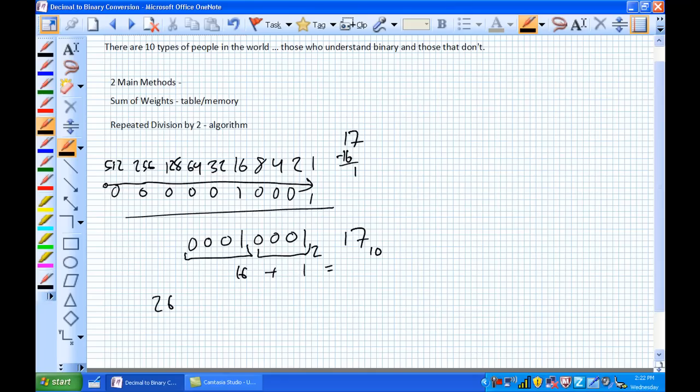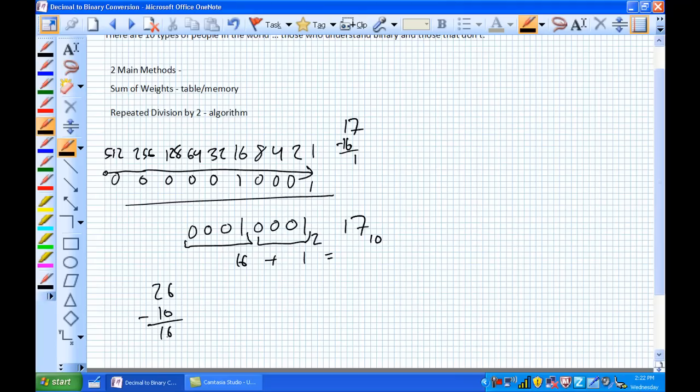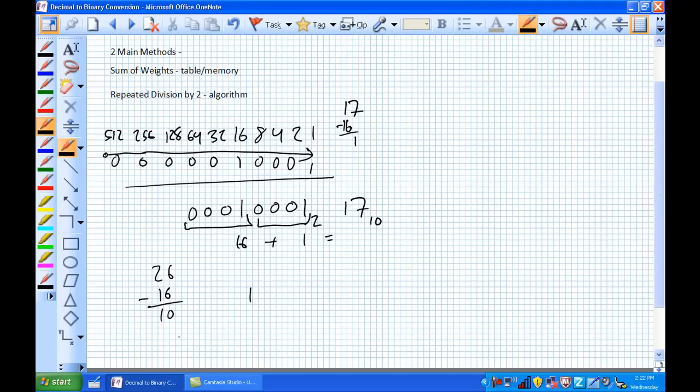Let's do another one: 26. You can shortcut all the mess because you know there's no 512s, 256s or anything like that in it. But there's a 16 in there, which gives us 10 left over. So there's one 16. Inside 10, there's an 8 in there, which gives us 2 remainder.